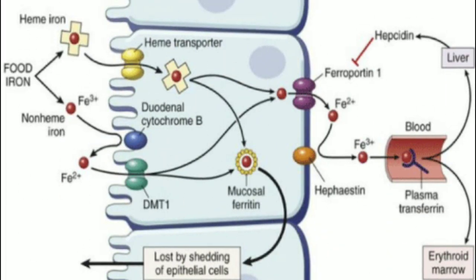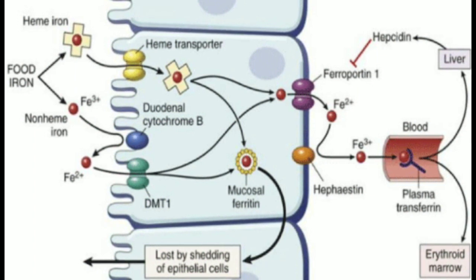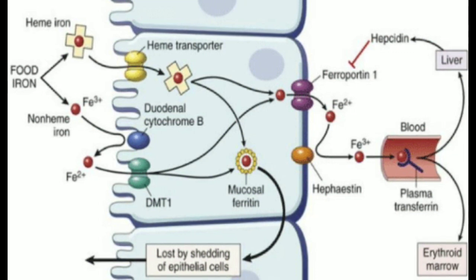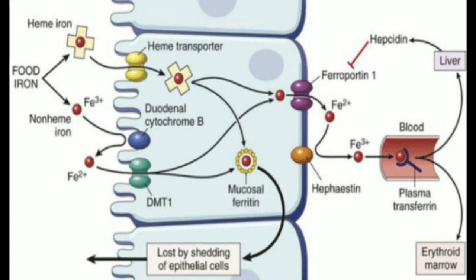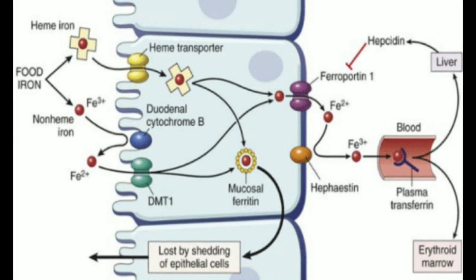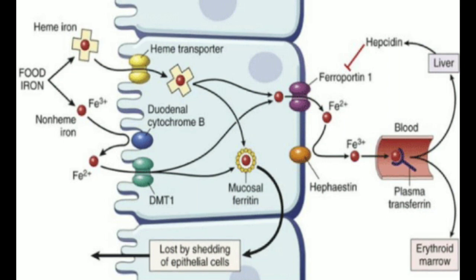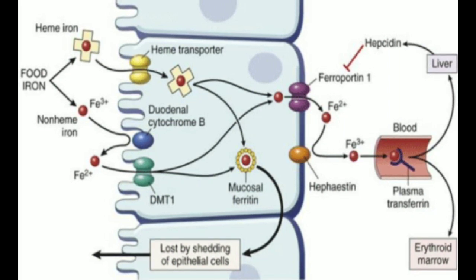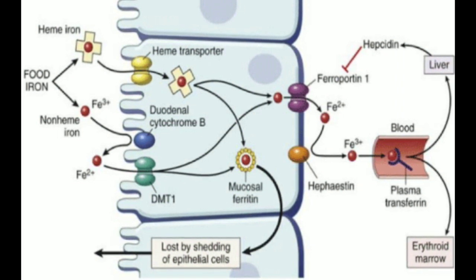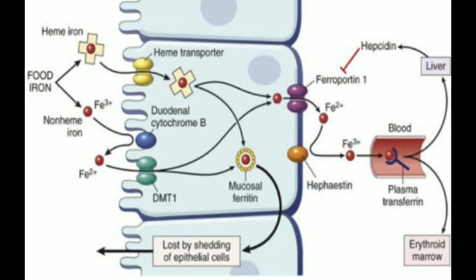Iron is absorbed from all parts of the small intestine. The liver secretes a moderate amount of apotransferrin into bile, which flows through the bile duct into the duodenum. Here, apotransferrin binds with free iron and also with certain iron compounds such as hemoglobin and myoglobin from meat we ingest. Apotransferrin then combines with the free iron to form transferrin.